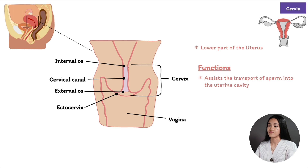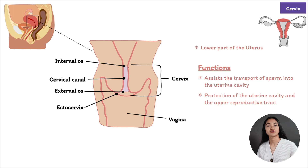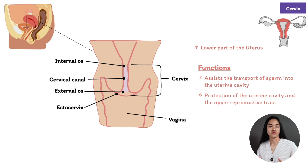The cervix has two main functions. First, it assists in the transport of sperm into the uterine cavity through dilation of the external and internal os, acting as a channel for sperm. Second, it provides protection of the uterine cavity and upper reproductive tract, helping to maintain sterility.